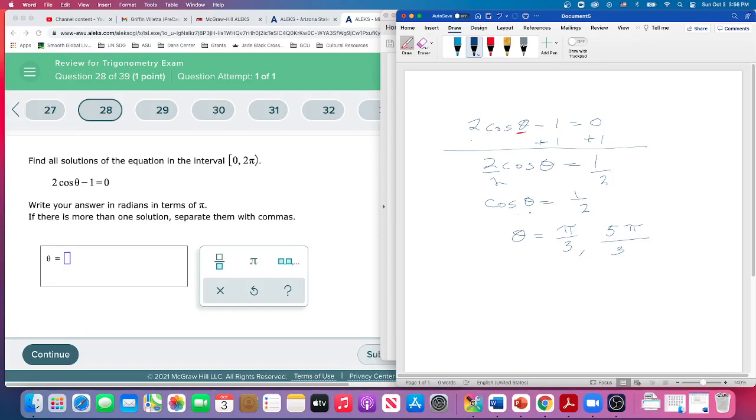the two values of theta that give us a value of 1 half. You plug those both in, you get 1 half. Those other, there's two values that will give us negative 1 half, but we're not counting those.